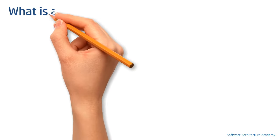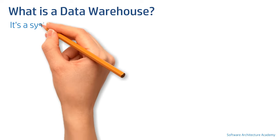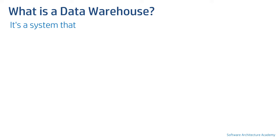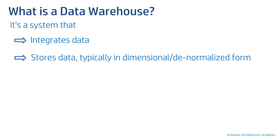What is a data warehouse? A data warehouse is a system that integrates data from multiple different kinds of systems for business use. A data warehouse typically stores data in dimensional form, which is denormalized.